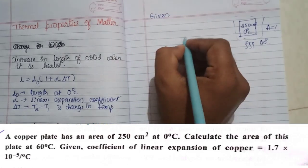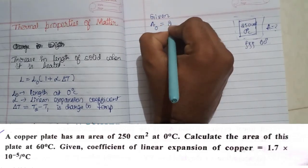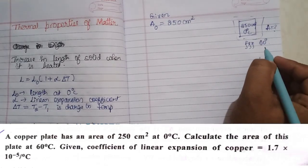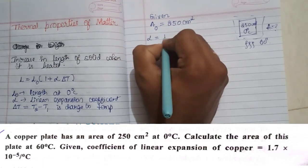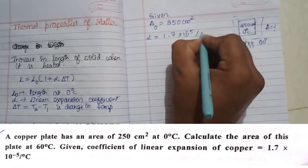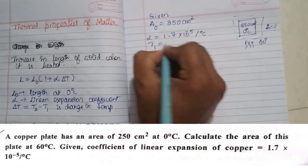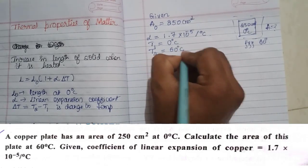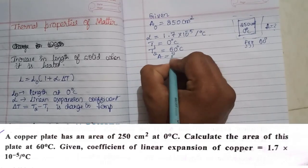We will write the given. First, the initial area A0 is equal to 250 centimetre square. Then they have given the linear expansion coefficient alpha equals 1.7 into 10 to the power of minus 5 per degree centigrade. The initial temperature T1 equals 0 degree centigrade, and the final temperature T2 equals 60 degree centigrade. We have to calculate the area A, which is our unknown.